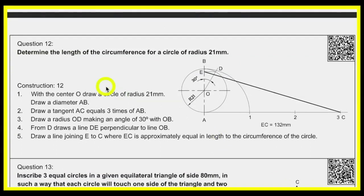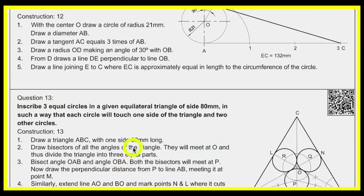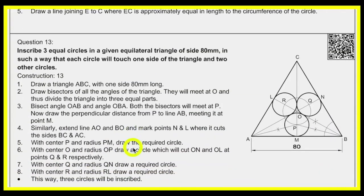Now, how to find the circumference of a circle geometrically — the circumference is 2πR, but we do it geometrically. Take A to B and cut three times. Then from point O draw a 30-degree angle with the vertical and draw a horizontal line to get point E. Join E to point C — this gives the circumference of the circle. Always cross-check with 2πR.